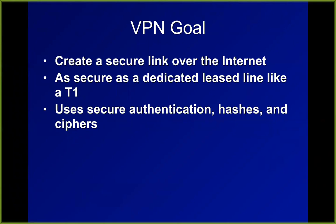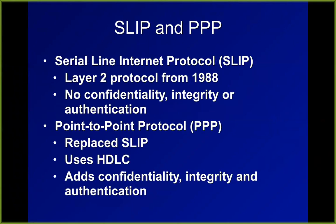The idea is to simulate having a fast line like a T1 or faster. SLIP was one of the earliest protocols for this — just a transport protocol, a way to put LAN packets into a WAN packet and deliver it over the internet. PPP was another one that came after that, mostly used by DSL lines to connect to the ISP from one point to one point.